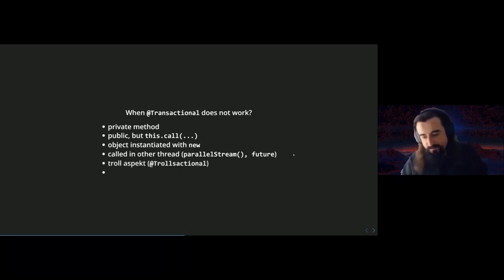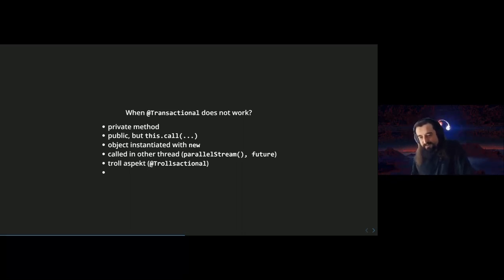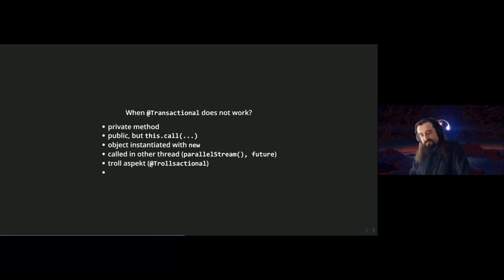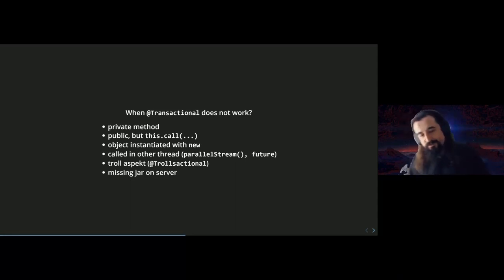Another problem: `@Transactional` typically uses thread-local context, so it fails in multi-threaded environments — parallel streams, fork-join pools. With 16 or 30 CPU cores available, our frameworks prevent us from using them freely. And there's the 'troll transactional' story: I once spent a long time debugging a transaction issue, only to discover the import was a company-written `@Transactional` with a bug — not the standard Spring one.